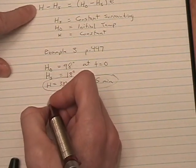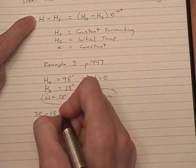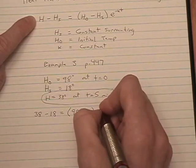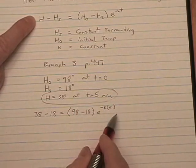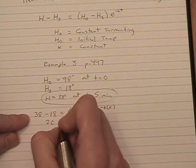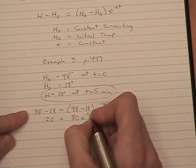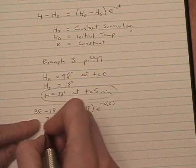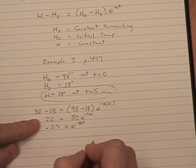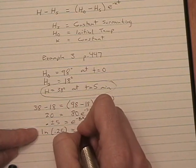Substituting what we know into our equation, we get 38 minus 18 equals 98 minus 18 e to the negative k times 5, or negative 5k. Let's simplify and solve for k. This is 20, this must be 80, e to the negative 5k. Divided by 80, we get 0.25 equals e to the negative 5k. Natural log of both sides, natural log of 0.25 equals negative 5k.